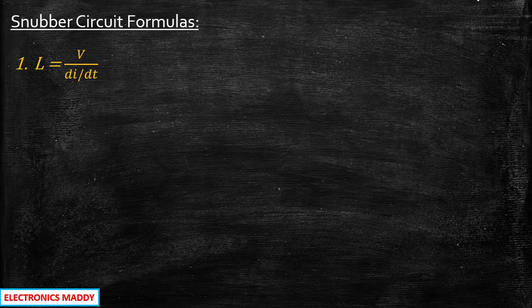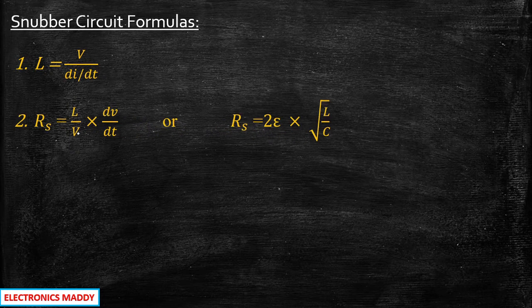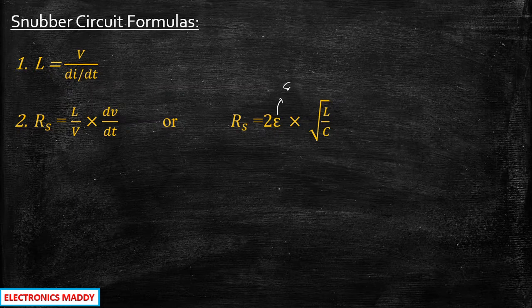Previously we had derived the formulas for inductor, capacitor and resistor. In this video we are going to use those expressions. So let us make a note of them — it will be very helpful for solving the numericals. The first important formula is L = V / (di/dt).